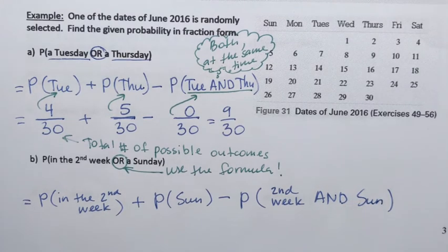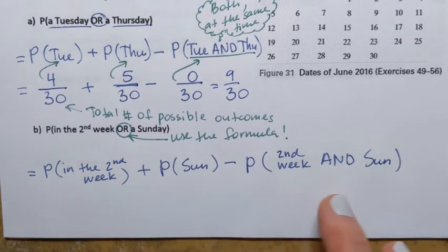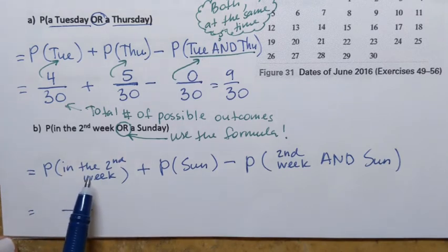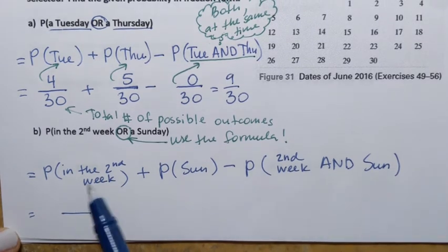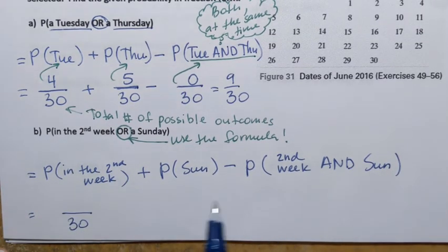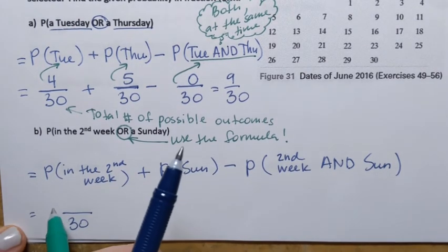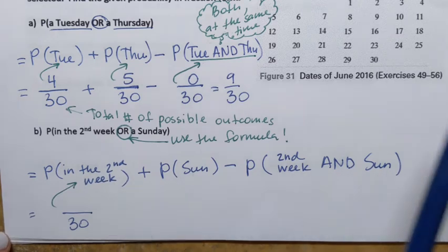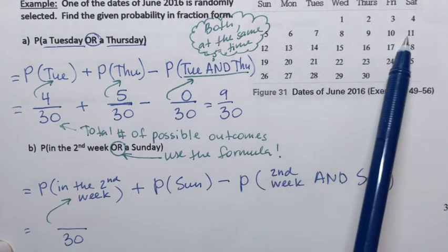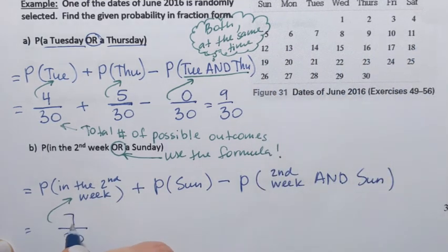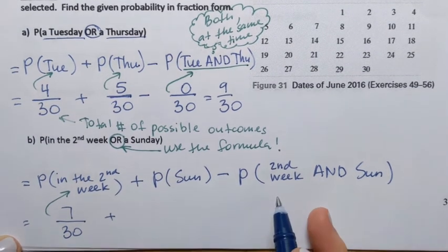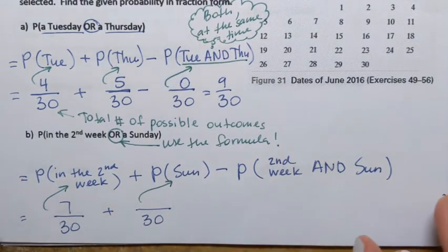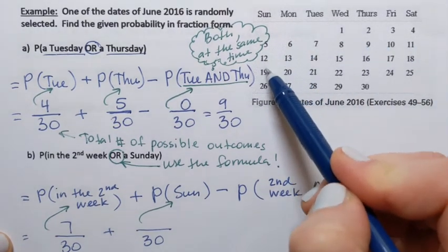Now we calculate each probability. For the probability of the second week: denominator is 30, and the numerator corresponds to how many days on the calendar are in the second week. The second week is a full week, so there are seven days — giving us 7 over 30. For the probability of Sunday: the denominator is 30, and counting the Sundays in that month gives us four Sundays — so 4 over 30.